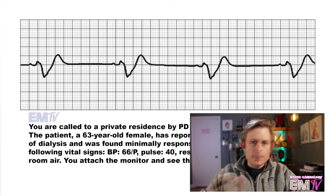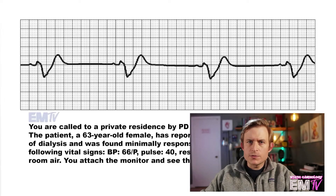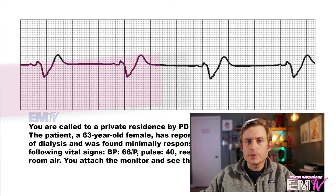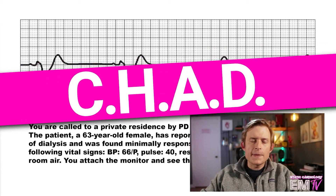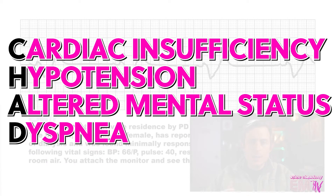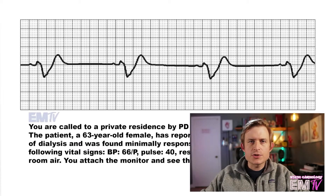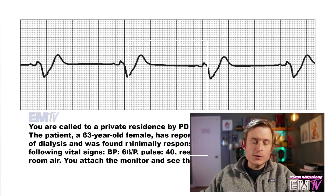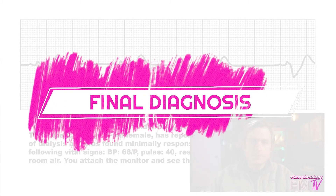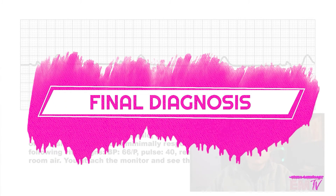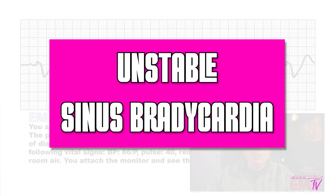Back to static cardiology — the vast majority of your points are scored through adequate treatment, and we must first determine which side of the ACLS algorithm to follow. So is the patient stable or unstable? For my unstable criteria, I use the acronym CHAD, which stands for cardiac insufficiency, hypotension, alteration in mental status, and dyspnea. Based on my patient's current presentation and vital signs, she is definitely unstable. So my final diagnosis for static cardiology is going to be an unstable sinus bradycardia.